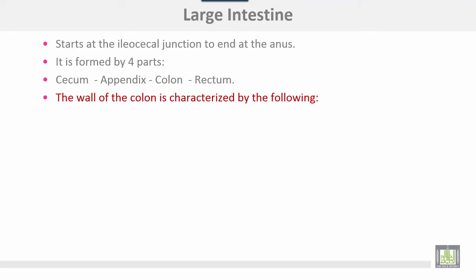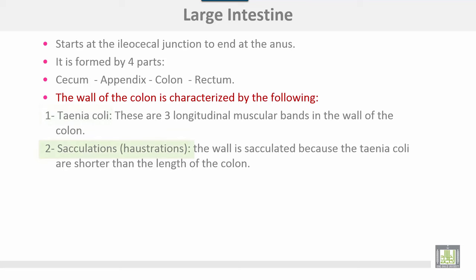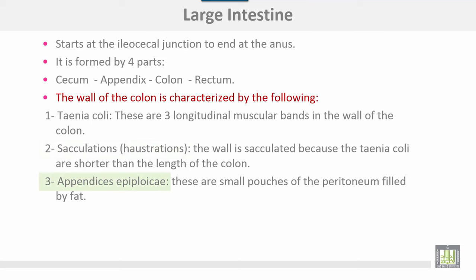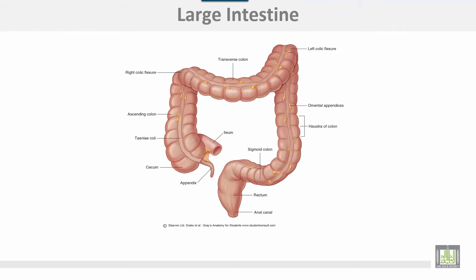The wall of the colon is characterized by the following. First, it has taenia coli — three longitudinal muscular bands in the wall of the colon. Second, sacculation: the wall is sacculated because the taenia coli are shorter than the length of the colon. Third, appendices epiploicae — small pouches of peritoneum filled with fat. All these features are absent from the small intestine.